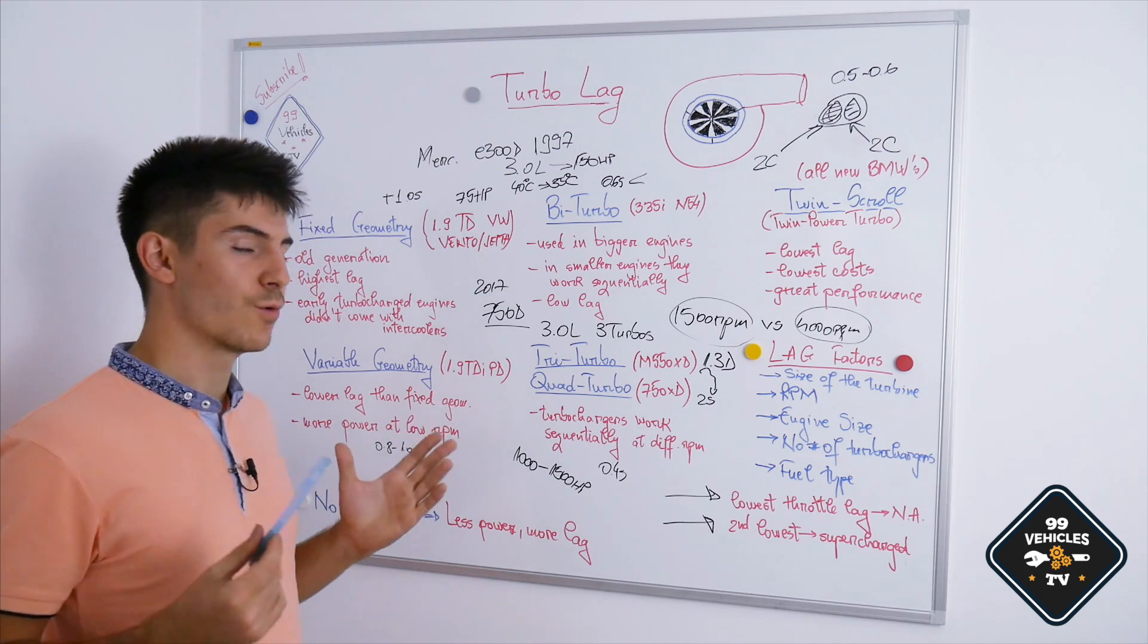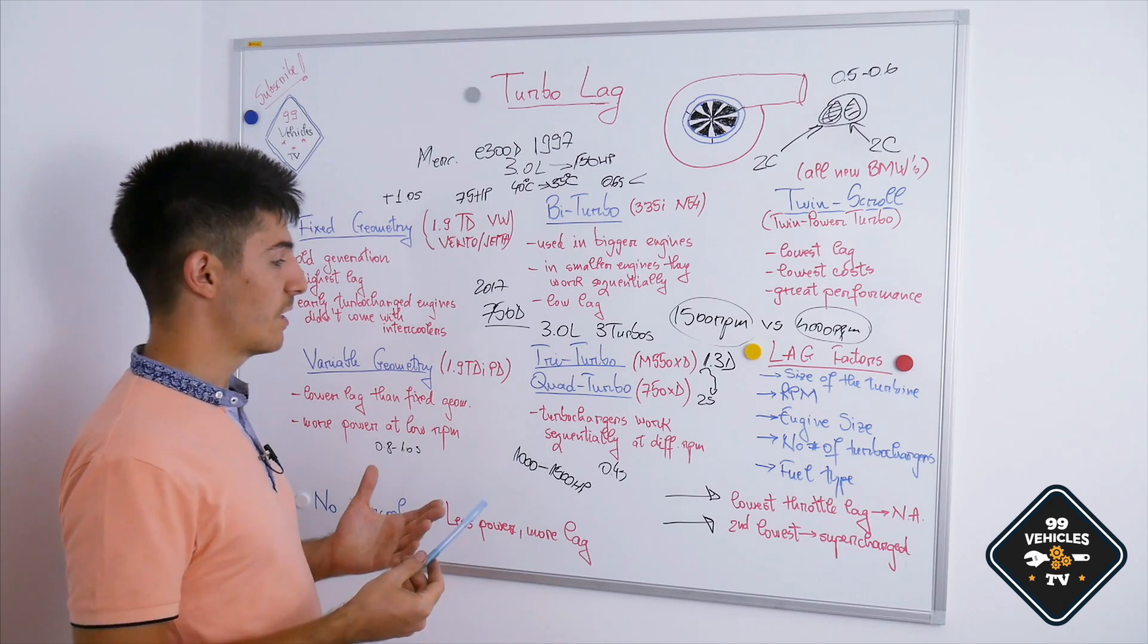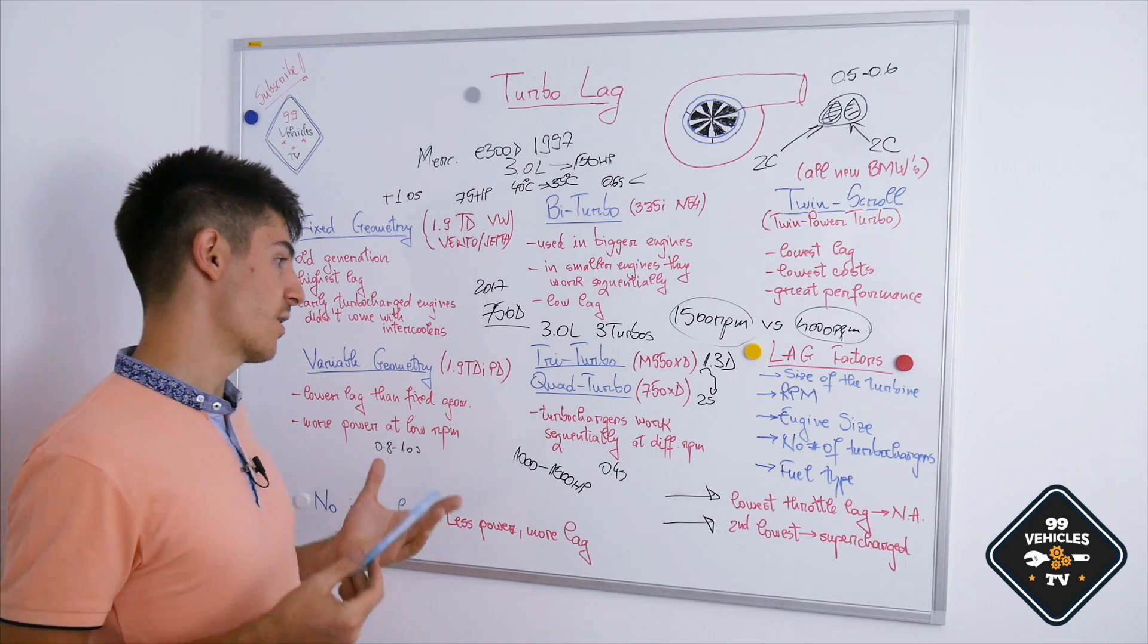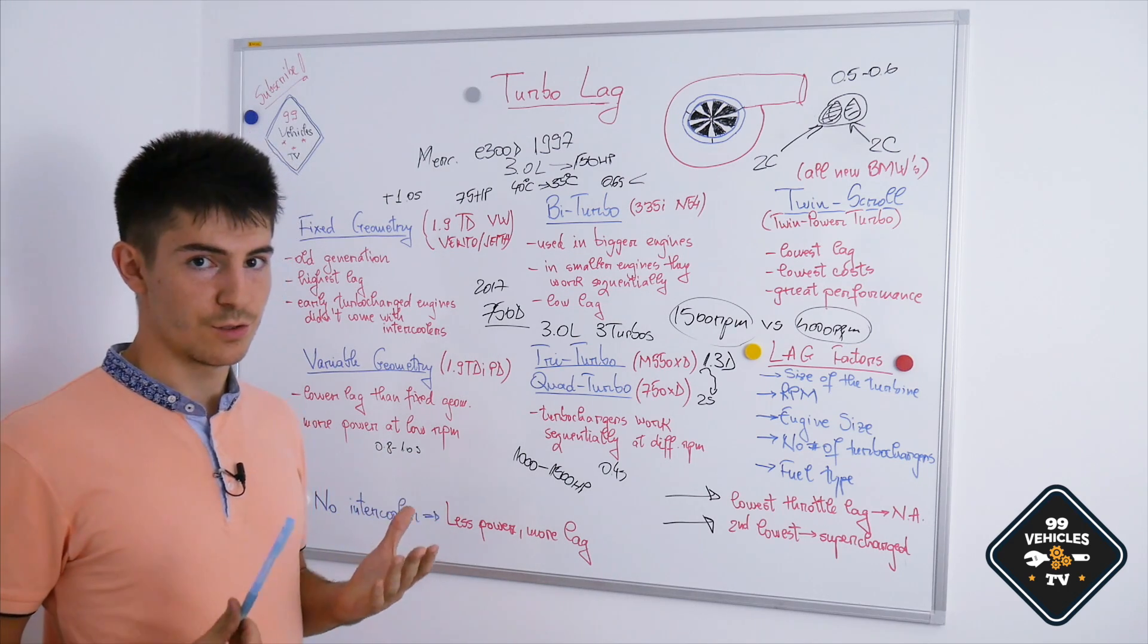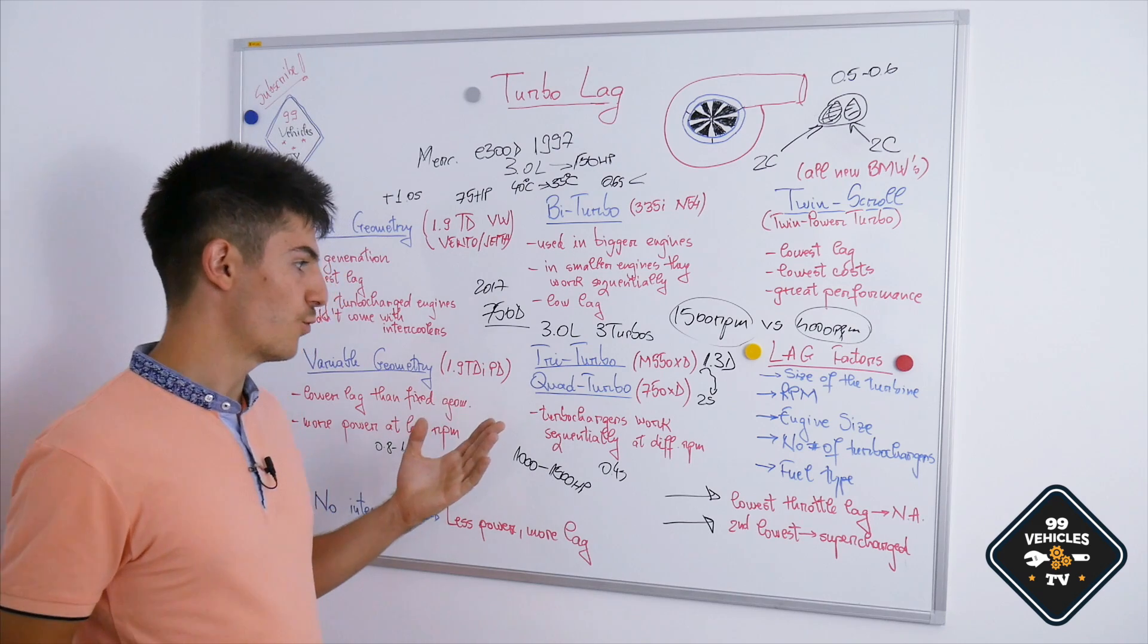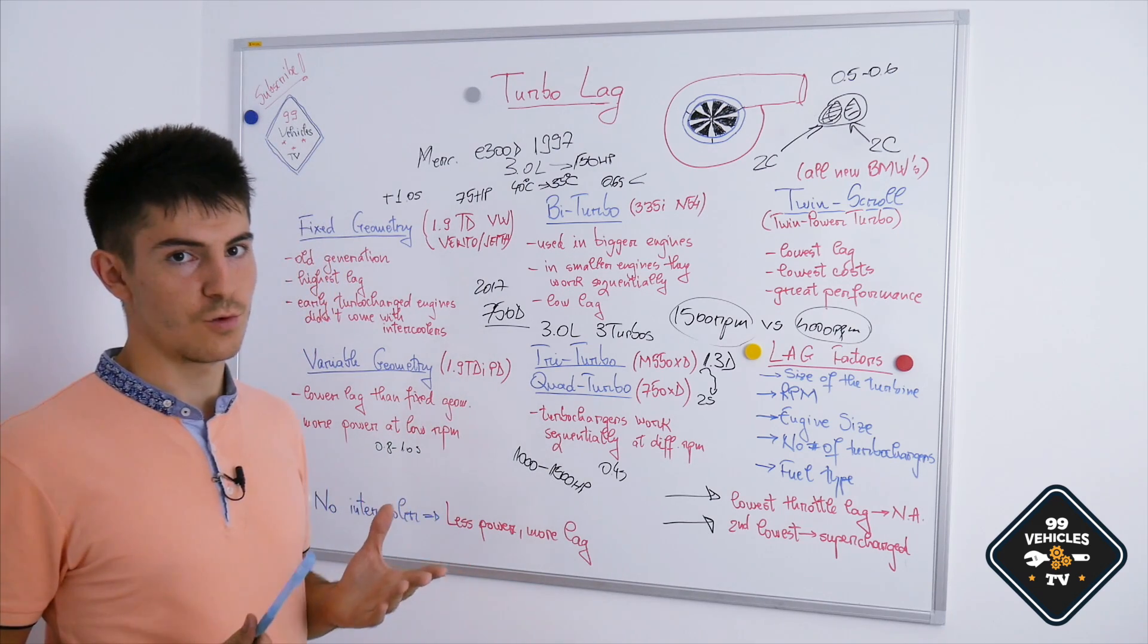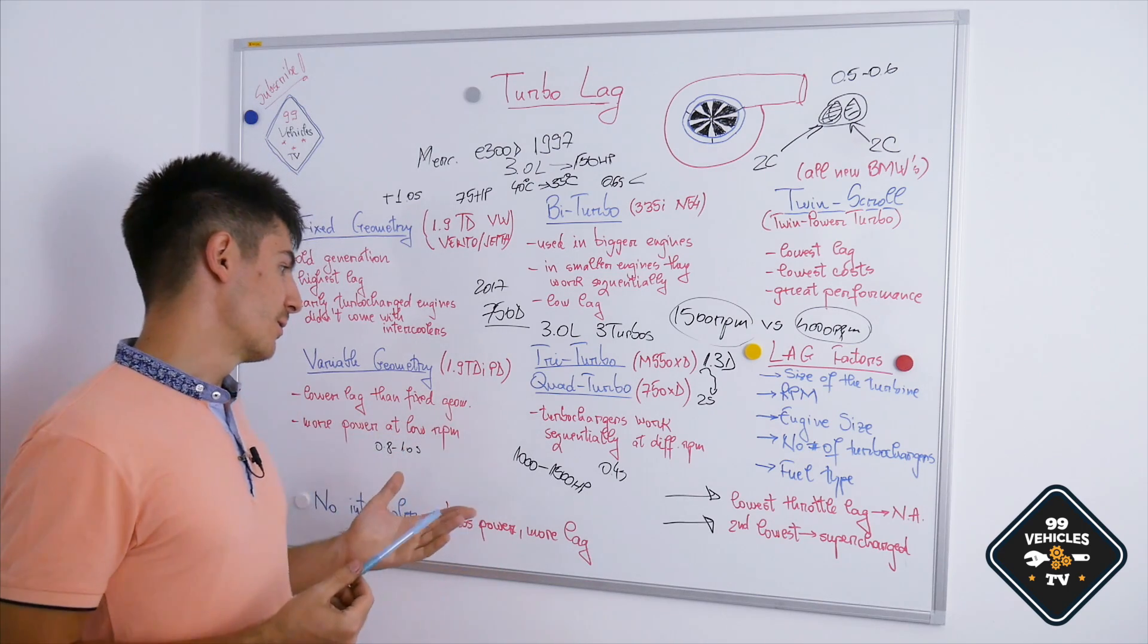Also, we can see even three or four turbochargers in production cars. The BMW M550 X-Drive has a 3-liter turbocharged diesel engine with three turbochargers. Also, the latest 7-series has four turbochargers with 400 horsepower out of a 3-liter. This engine, in my opinion, won't last too long.